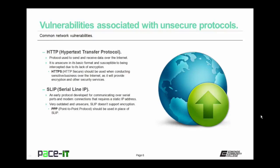HTTP is susceptible to being intercepted due to its lack of encryption. HTTPS, or HTTP Secure, should be used when conducting sensitive business over the internet as it will provide encryption and other security services. Hopefully your network doesn't still use Serial Line IP, or SLIP. It is an early protocol developed for communicating over serial ports and modem connections that required a static IP address. It is very outdated and very unsecure — SLIP does not support encryption. Hopefully you will be using point-to-point protocol, or PPP, in its place, as PPP does support encryption and is much more secure.